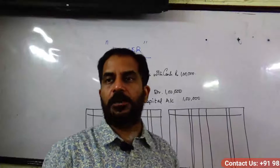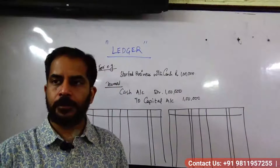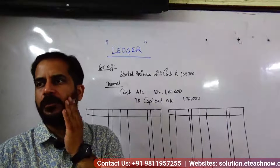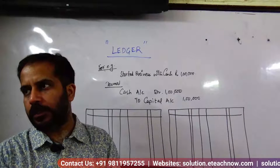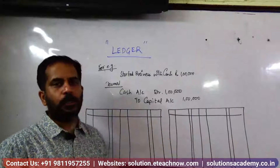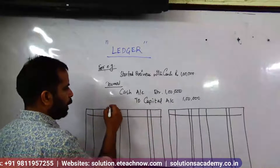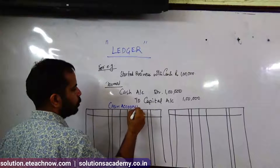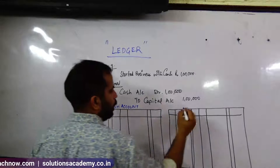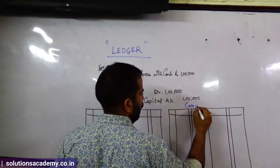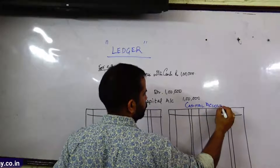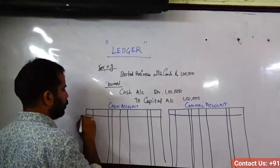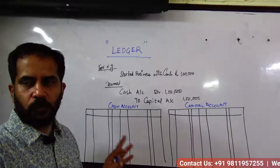How many accounts are involved in this transaction? Two — one cash and one capital. So I made two accounts. One is called Cash Account and one is called Capital Account. The format will be the same.